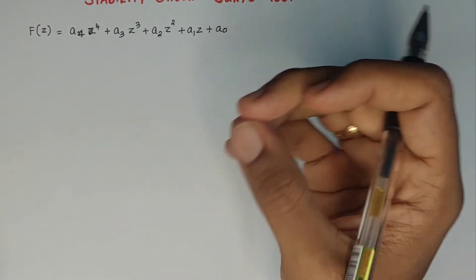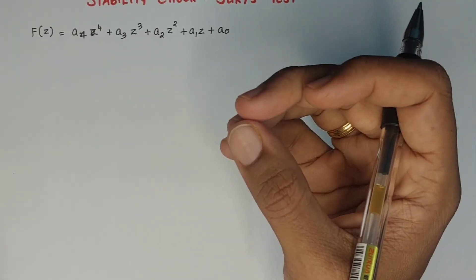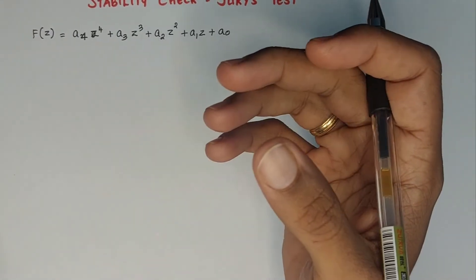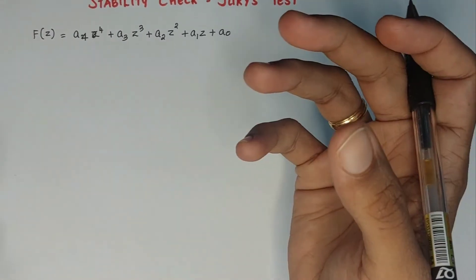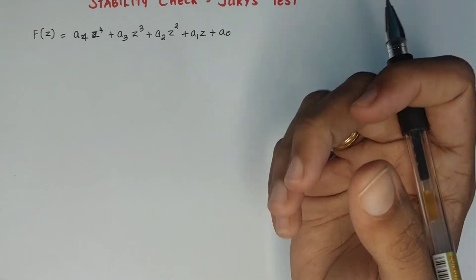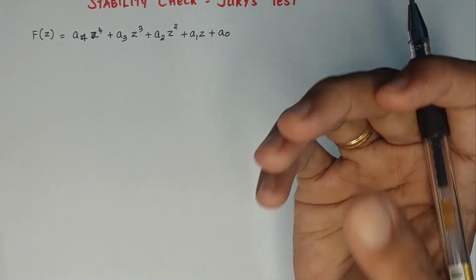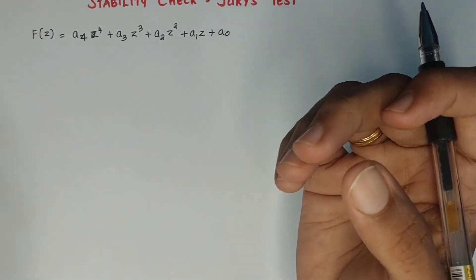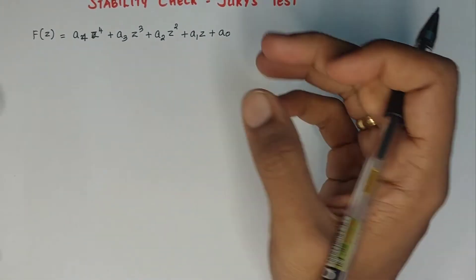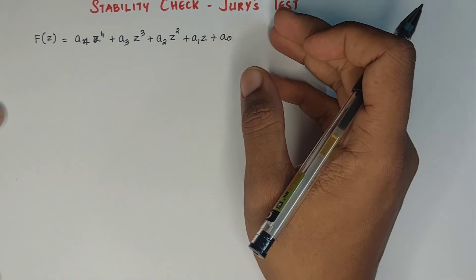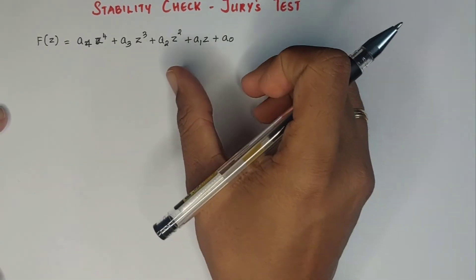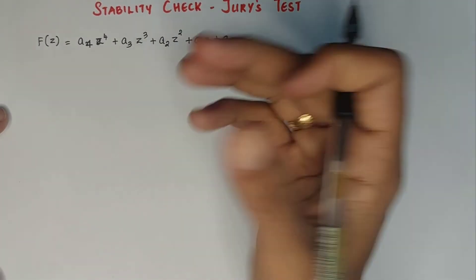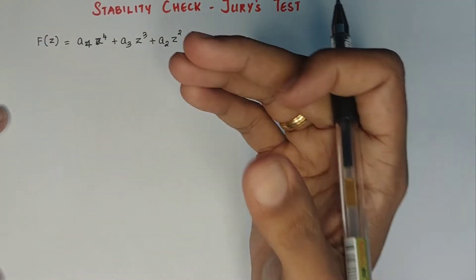Hi dears. Today we will be discussing about the stability of a sampled data system using Jury's stability test. In Jury's test, we will check whether the system is stable or unstable.